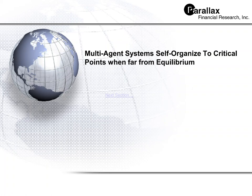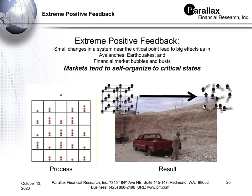This is a continuation of the financial seismology presentation, part two. We're going to focus on our contention that multi-agent systems self-organize to critical points that are far from equilibrium. To show that, we go to the next slide: extreme positive feedback.